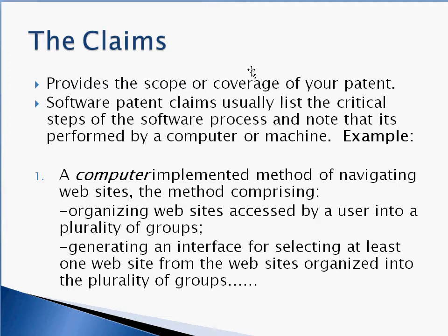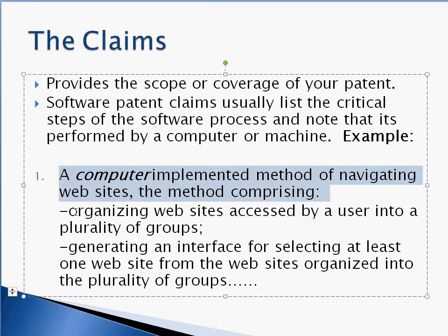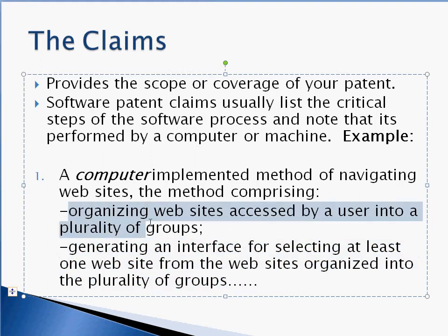The last part are your claims. Your patent claims define what your invention is and the scope of your rights for your patent. Software patent claims are all very similar in the sense that they have two features: one is that they should always mention a computer or a machine, because it's very hard to get a patent on just a method of doing something that the average person could do without a machine or a computer. And then they should of course include methods or steps. This is a patent claim from Hewlett Packard where they talk about a computer implemented method of navigating websites, the method comprising step one, step two. Your figures should show what each of these steps are, and that's what a typical software patent claim looks like.